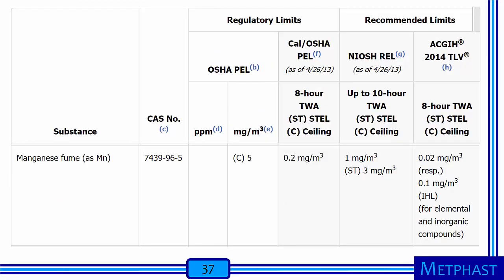Here I show an example for manganese fume, which has dramatically different occupational exposure limits across agencies. The OSHA PEL is 5 milligrams per meter cubed as a ceiling level. The NIOSH RELs are 1 milligram per meter cubed as a time-weighted average and 3 milligrams per meter cubed as a short-term exposure limit. The ACGIH TLVs are much lower — 0.02 milligrams per meter cubed for respirable particles and 0.1 milligram per meter cubed for inhalable particles.